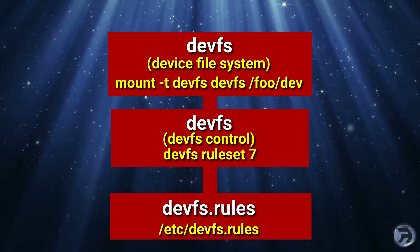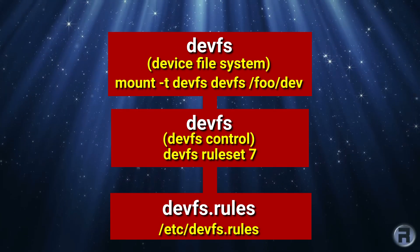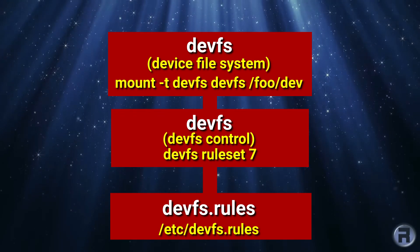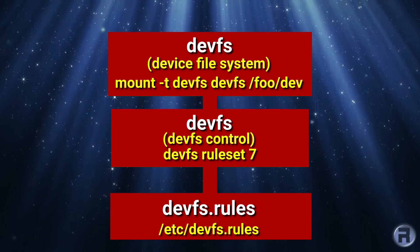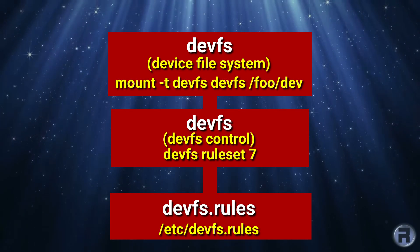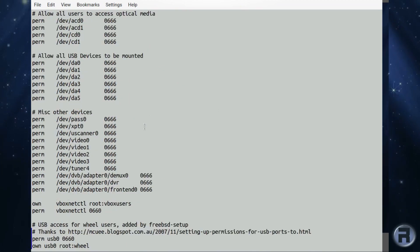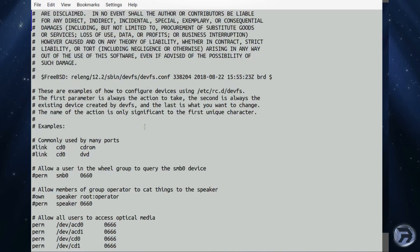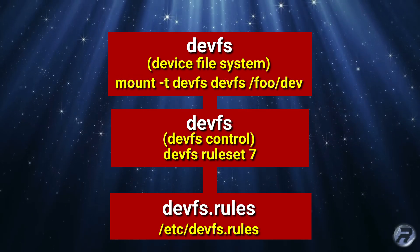The final section is the rule set we can define — rule set seven for example — and provides an easy way to create and apply devfs rules for devices that are not available at boot, say for USB sticks, etc. For devices available at boot, the file that we would be interested in is the devfs.conf. The devfs.conf file will provide an easy way to set ownership and permissions, or create links to devices available at boot.